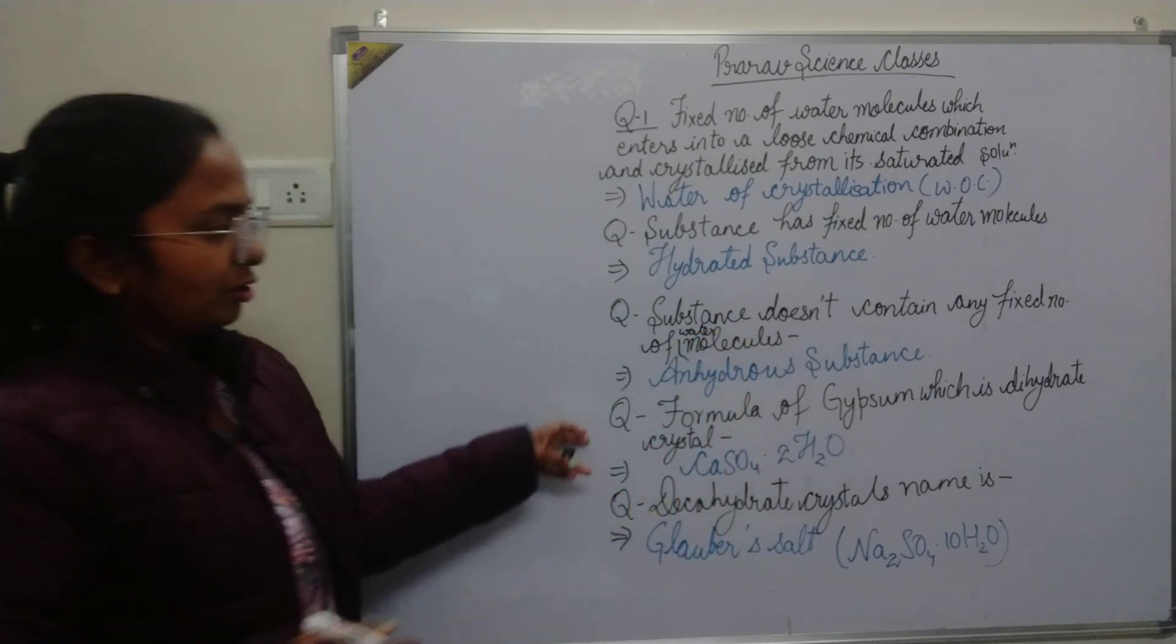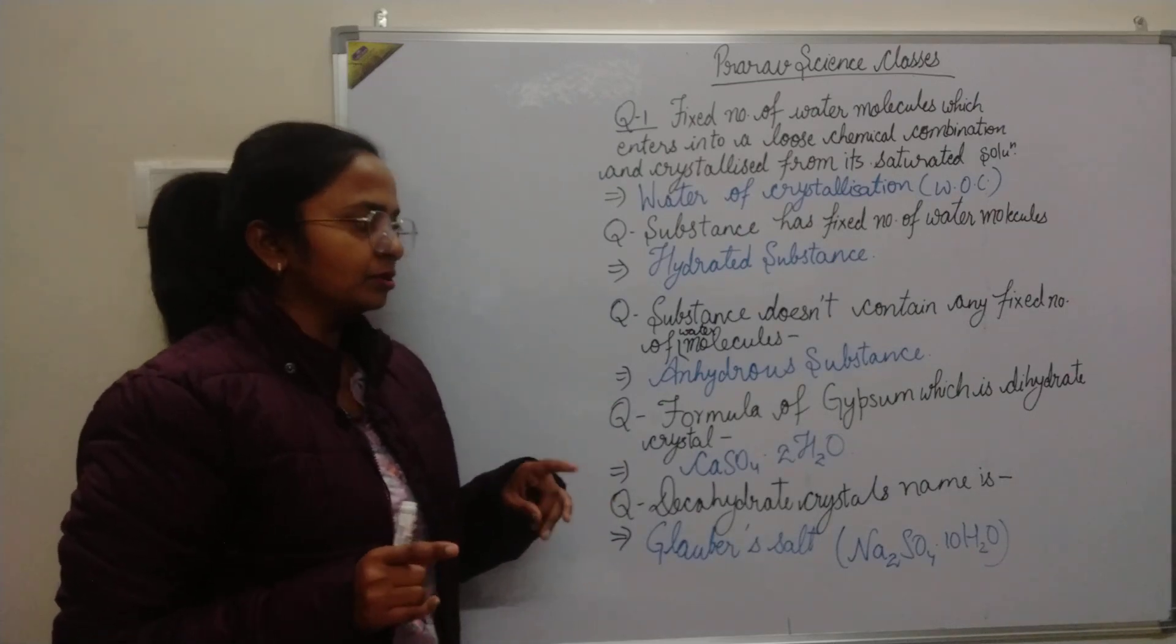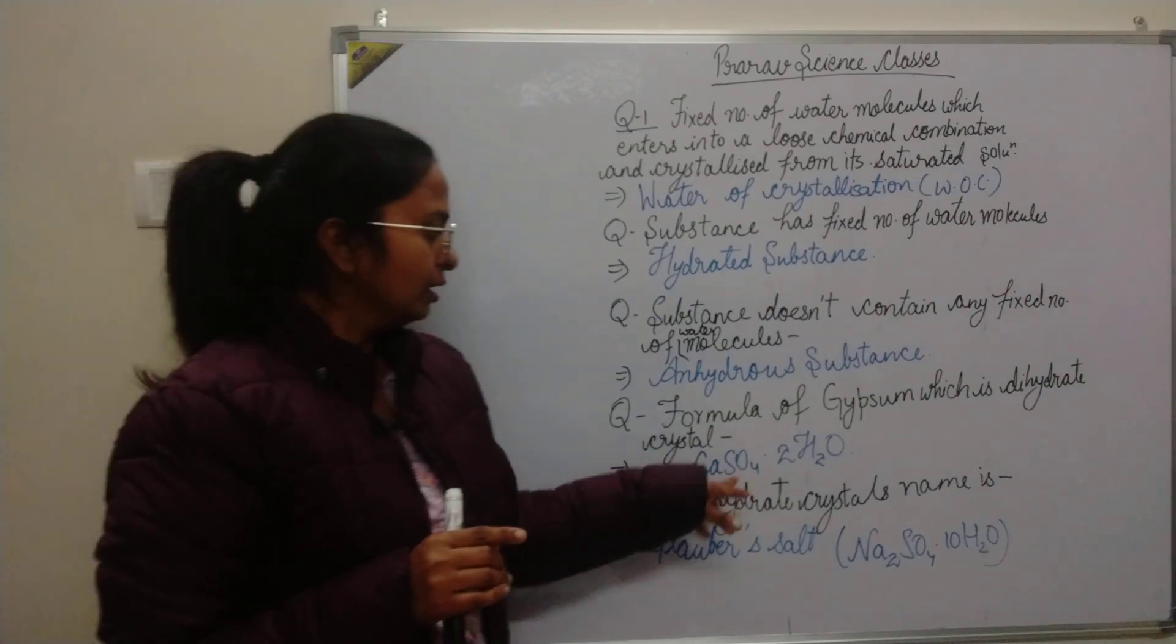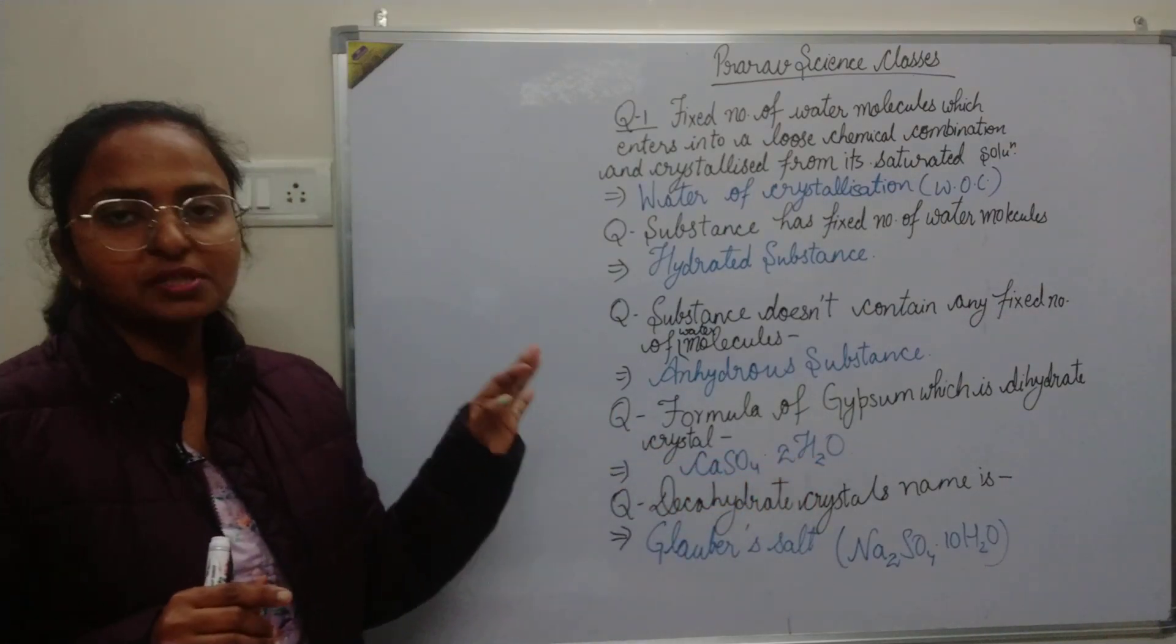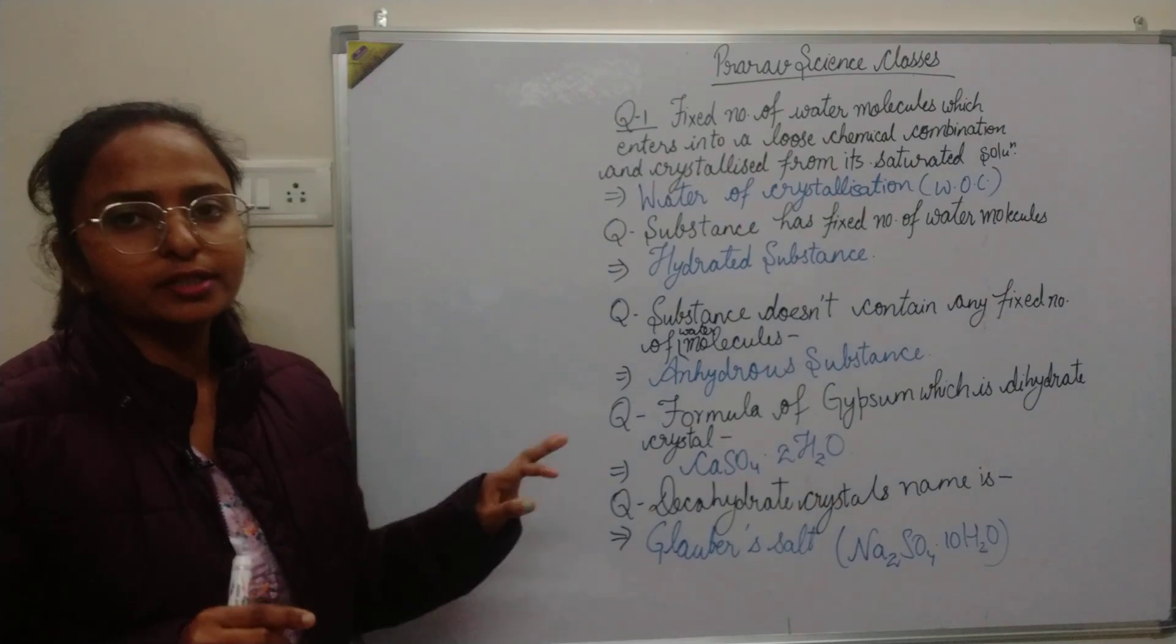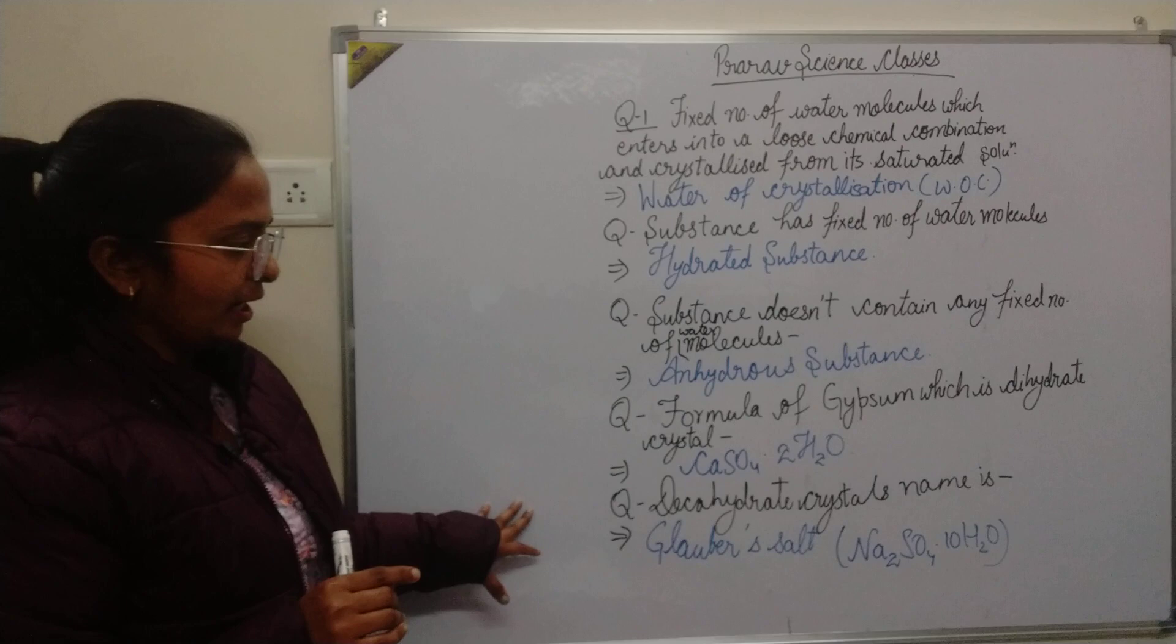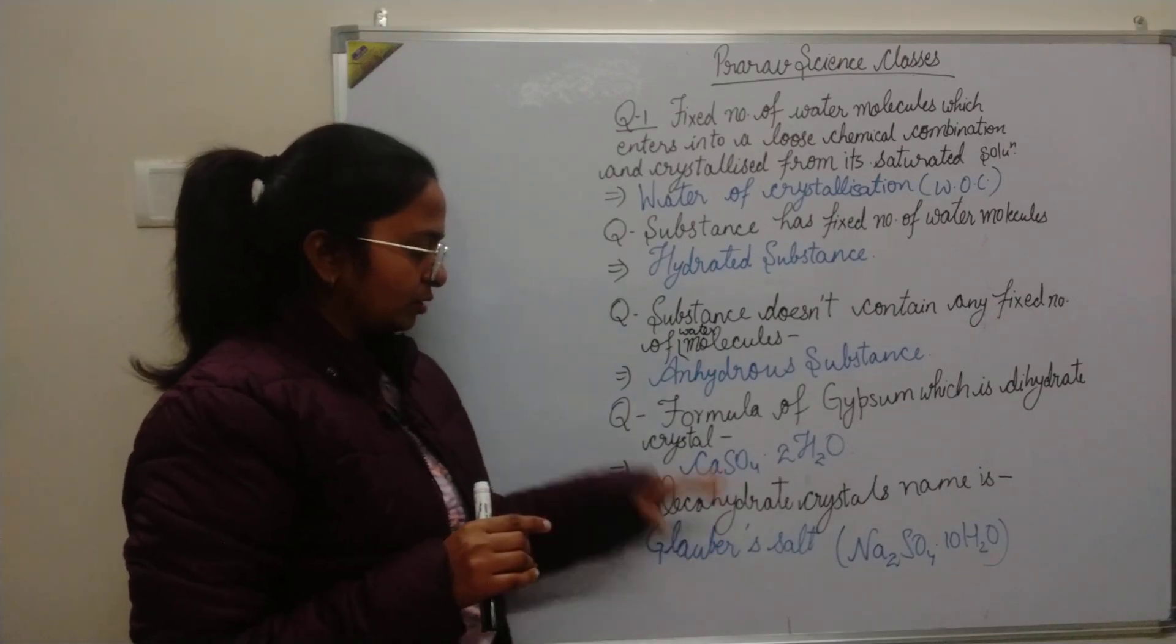Formula of gypsum, which is dihydrate. Gypsum is dihydrate, which means two water molecules, that will be CaSO4·2H2O, calcium sulfate plus two water molecules. Decahydrate crystals name is Glauber salt, Glauber salt decahydrate.